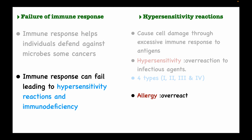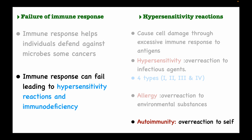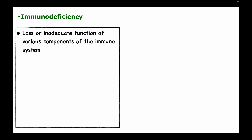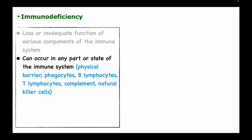Allergy is the overreaction of the body to an environmental substance, while autoimmunity is the overreaction of the immune system against itself, leading to autoimmune diseases such as systemic lupus erythematosus. Immunodeficiency is when there is loss or inadequate function of the various components of the immune system, including deficiencies in the barrier system, phagocytes, B and T lymphocytes, the complement system, and natural killer cells.